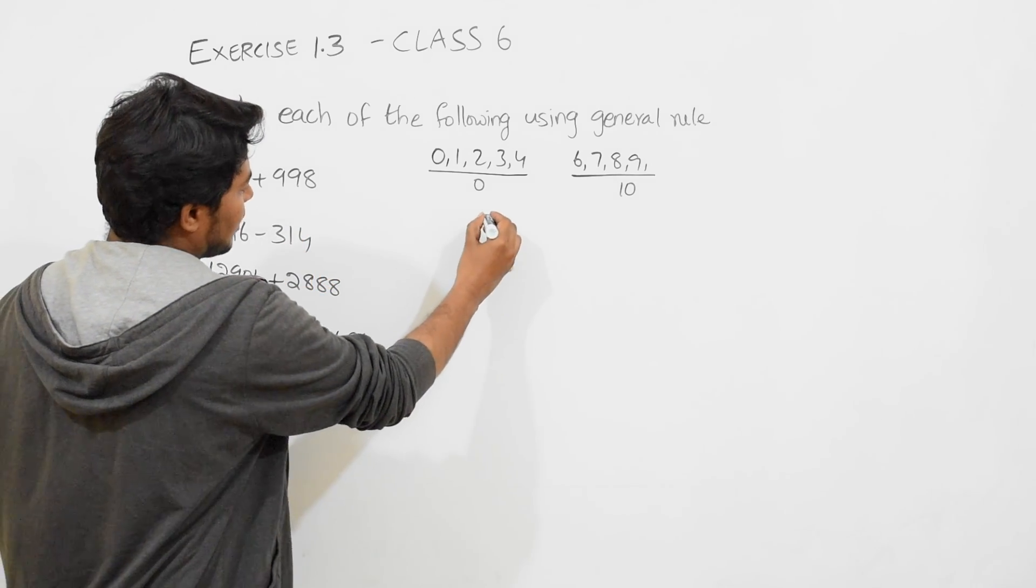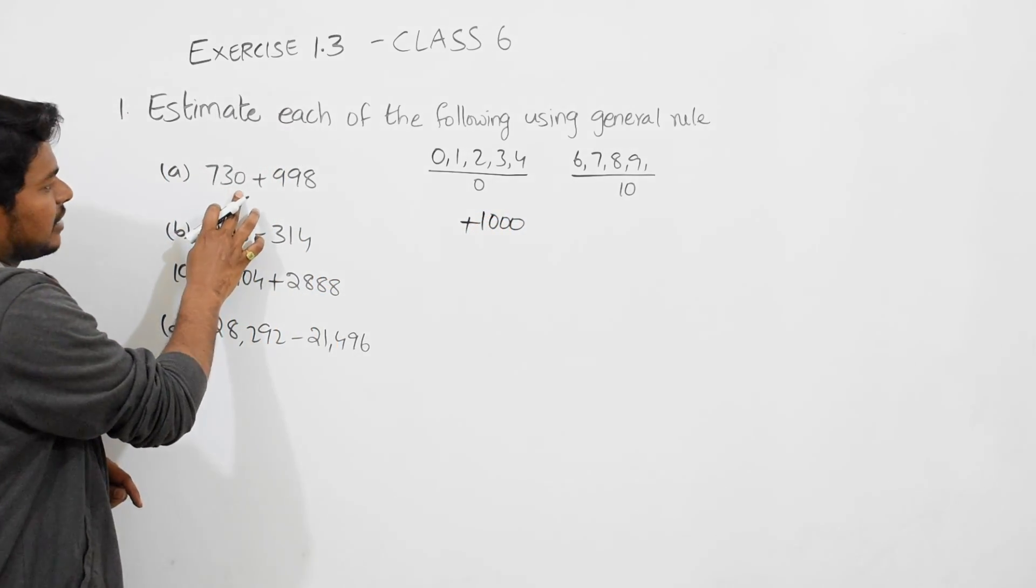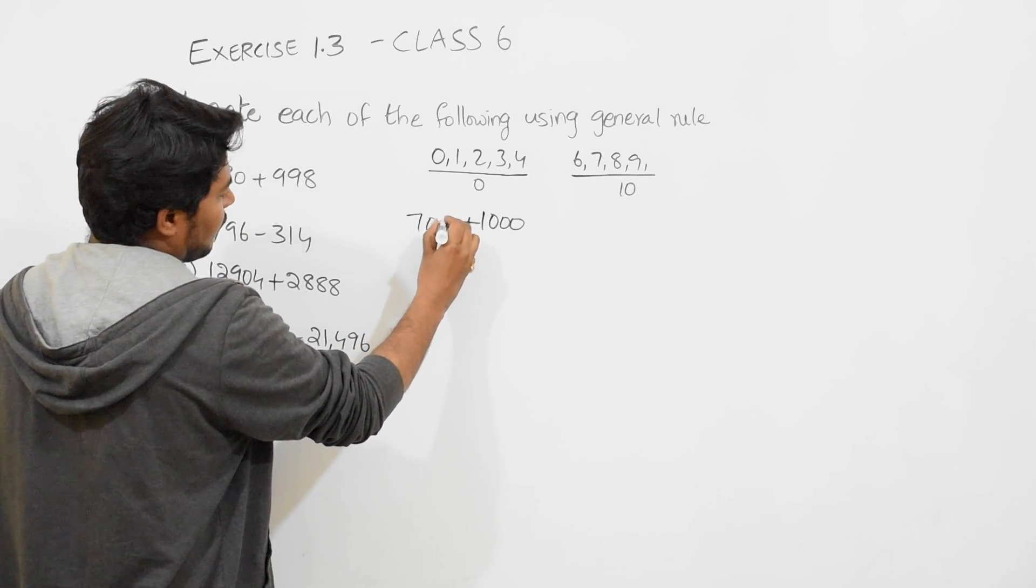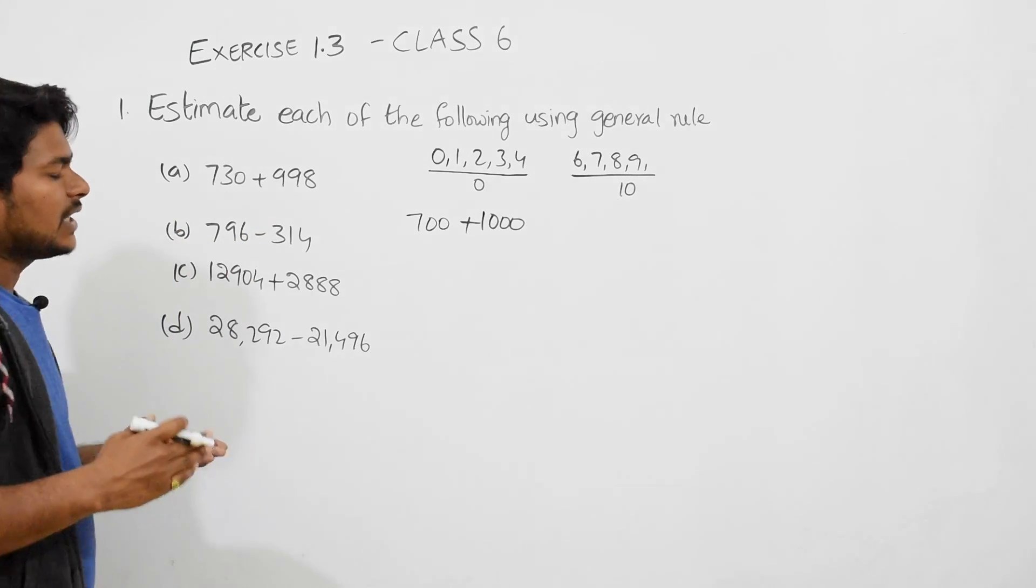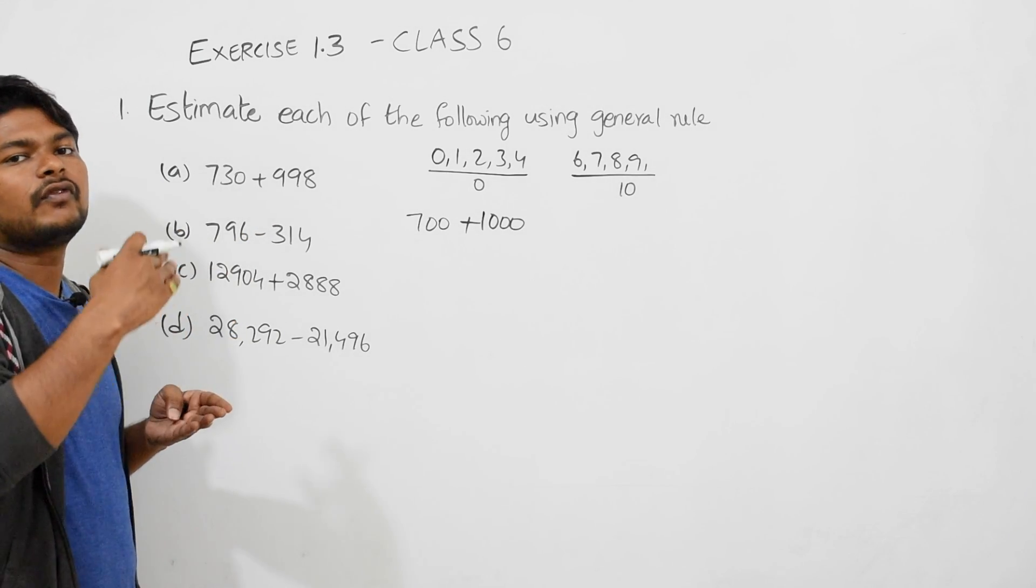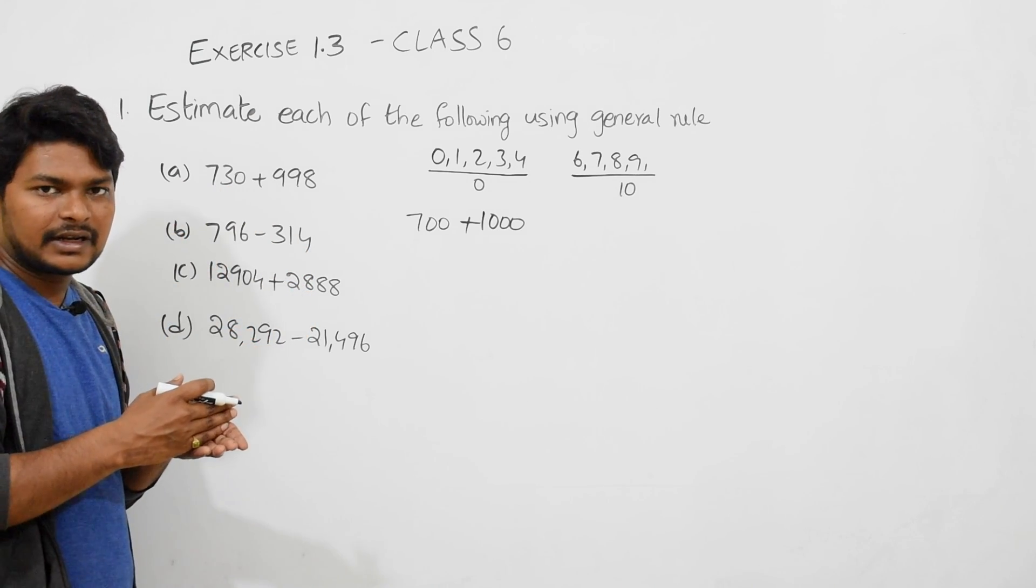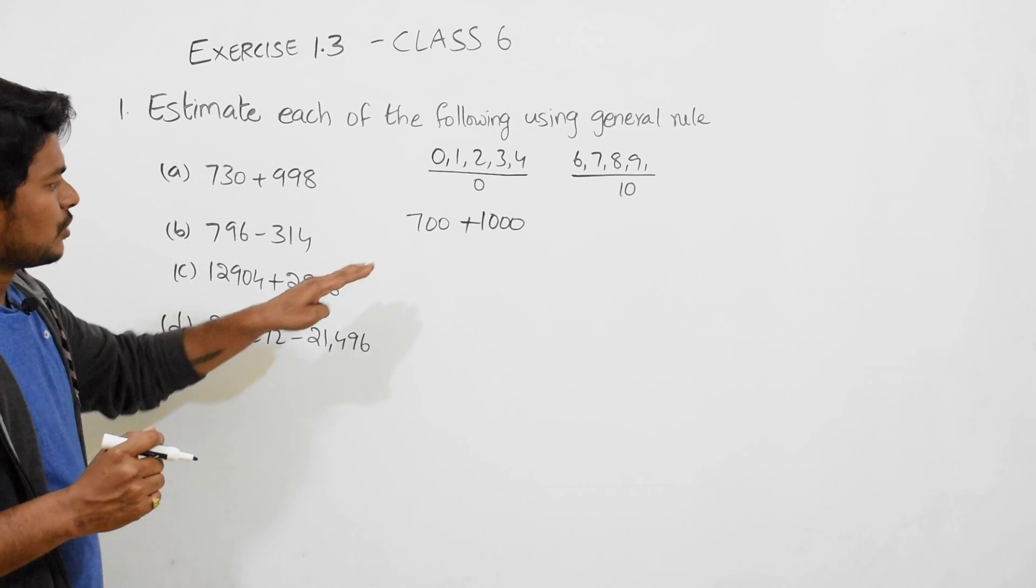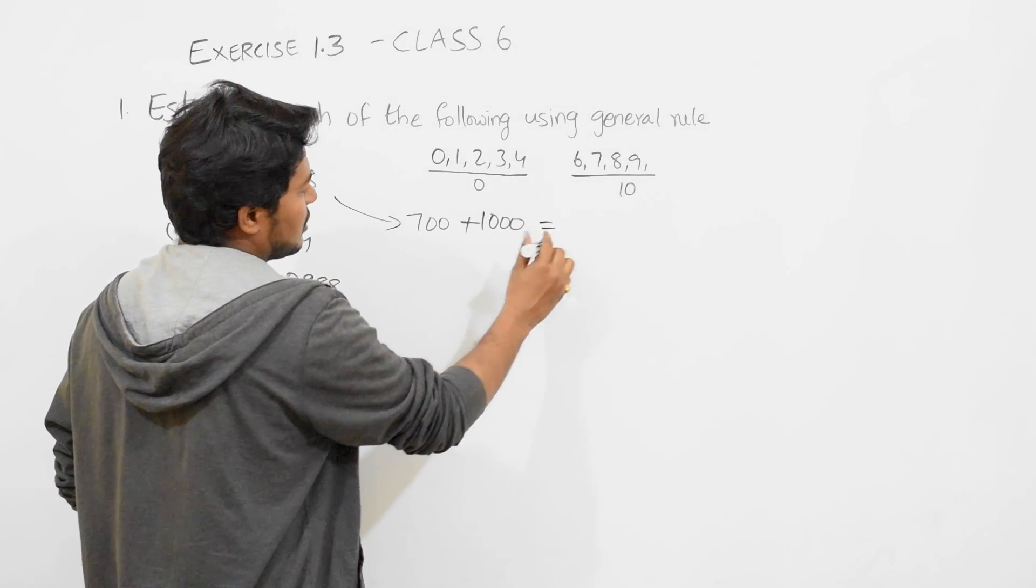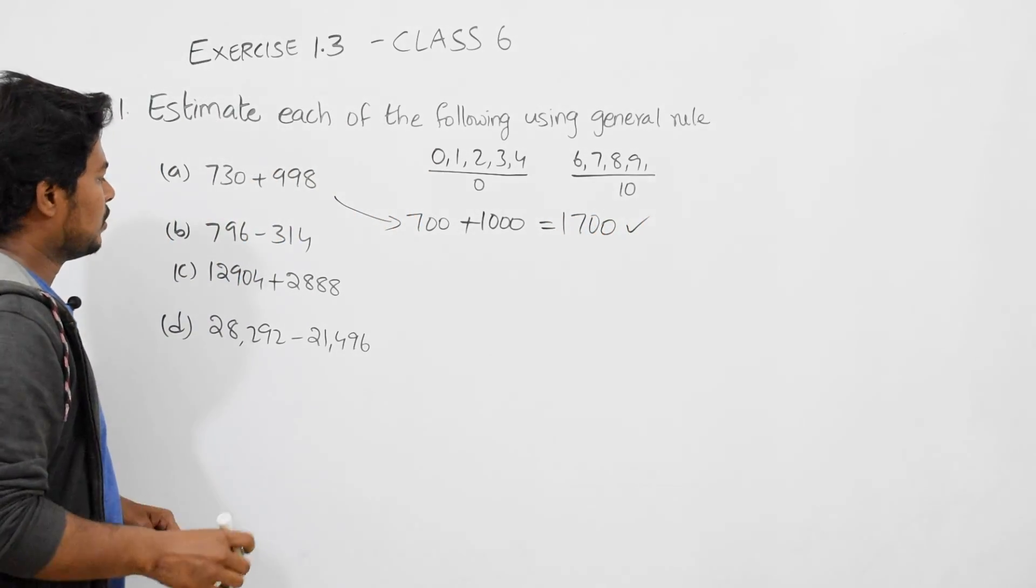Plus this 730, you can estimate to 700. Why? Because 730 is nearer to 700, very far from 800. 730 is located very near to 700, very far from 800. So we estimate these two values, and the answer is 700 plus 1000 equals 1700.